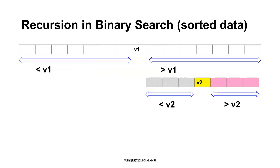Let's consider another recursive algorithm called binary search. Consider an array whose elements are sorted in ascending order — we want to find whether a value X is in this array. The first step compares X with the value at the center, which we call V1. If they match, we know X is in the array. If not, and X is greater than V1, we discard the half of the array smaller than V1, then compare X with the center of the remaining part. The array to be searched becomes smaller and smaller, until either X is found or nothing is left.